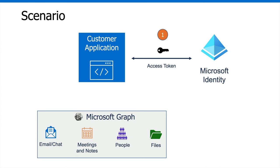Once we have that access token, we can use it to call into Microsoft Graph. It's kind of like a key that contains what the user allows us to do. We can hand that off to Microsoft Graph, and as long as that key fits — as long as security is right — then we can make these calls out to Microsoft Graph. So let's take a closer look at the role that Azure Active Directory and access tokens play with Microsoft Graph.